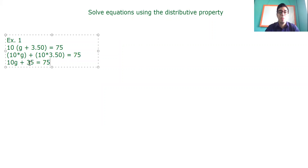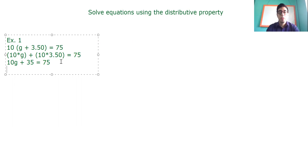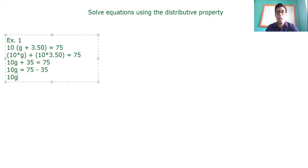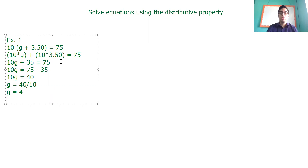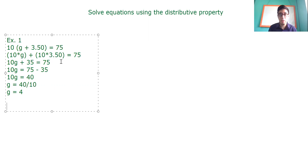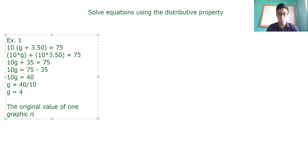The important part is to isolate the variable. What I'm going to do with this 35 that is in addition — I'm going to pass it to subtract, because I want my variable to be alone. So 10G equals 75 minus 35. I have that 10G equals 40, and G equals 40 over 10. So the original price is going to be $4.00. The original value of one graphic novel was $4.00, and that was the original price before they increased the value.